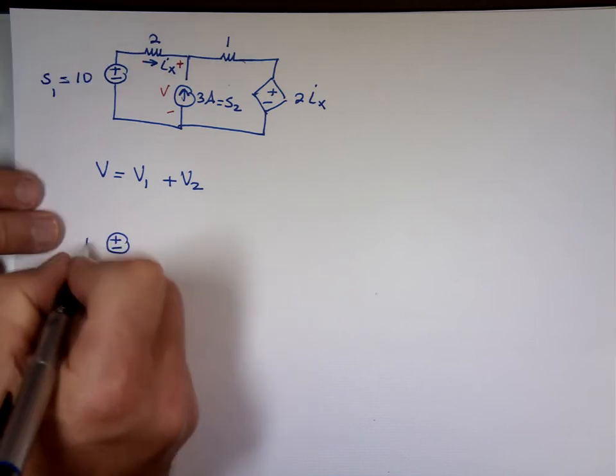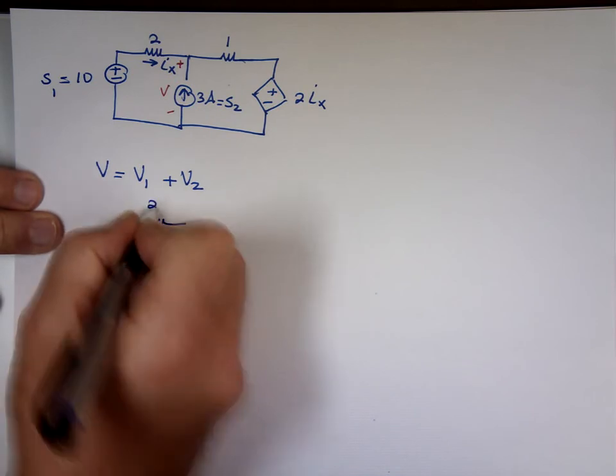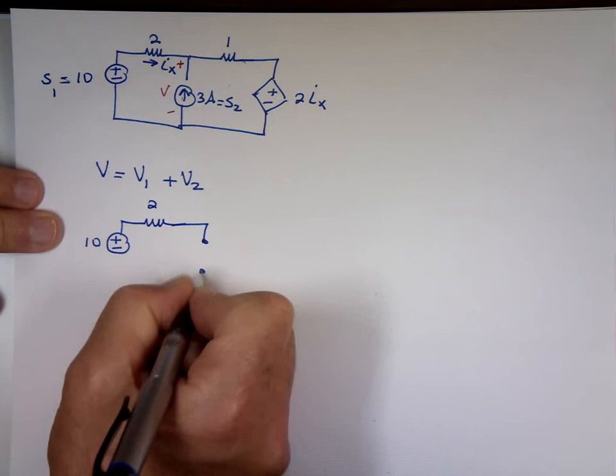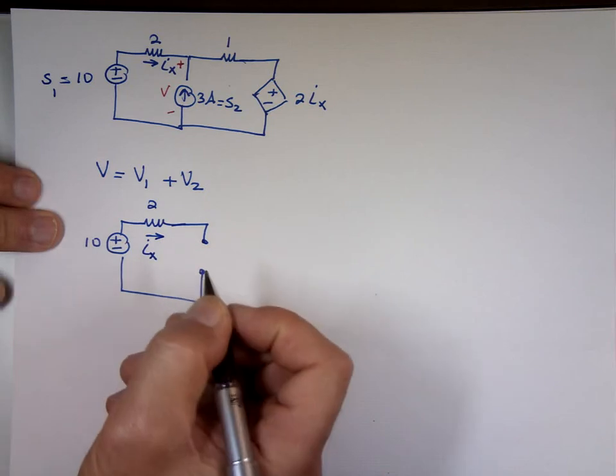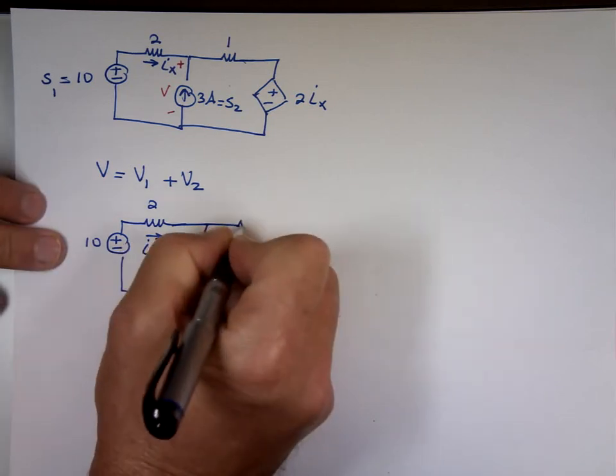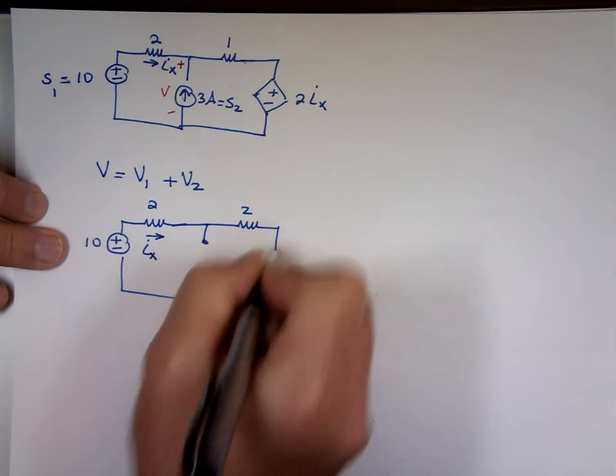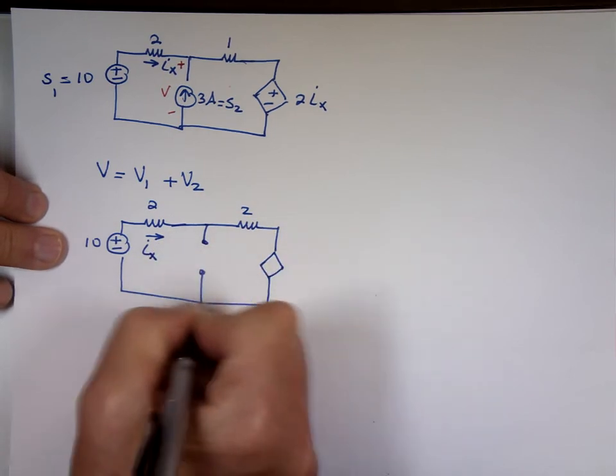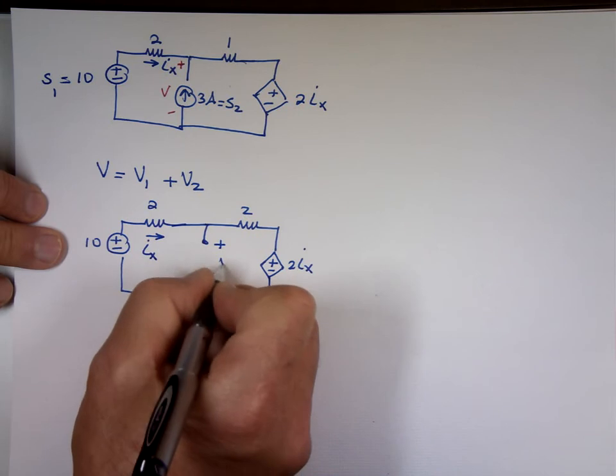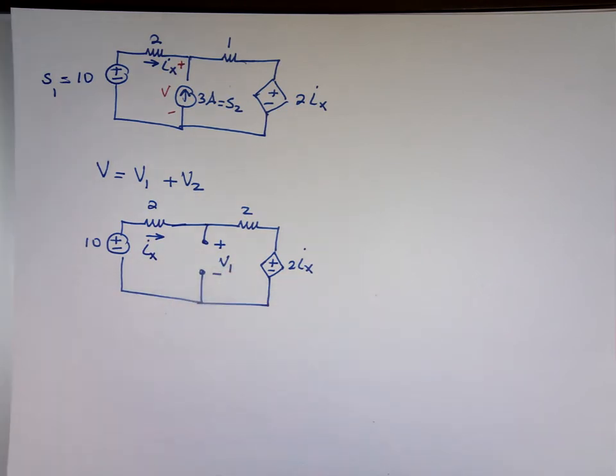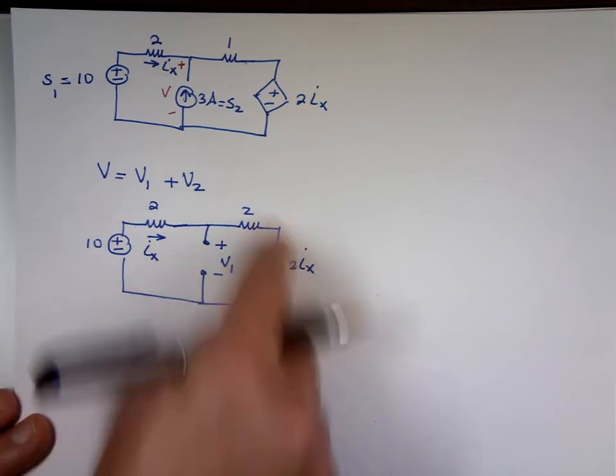Let's look at V1, the voltage due to source number 1. Source number 1 is the voltage source, so leave it in the circuit. That's 10. That's 2. Kill this one, that's an open circuit, that's a current source. This is i sub x. This is 2. Plus to minus 2 times i sub x, and this is the voltage V1. Notice the dependent source still there, and you can use any method to solve this. Maybe I'll do KVL here.